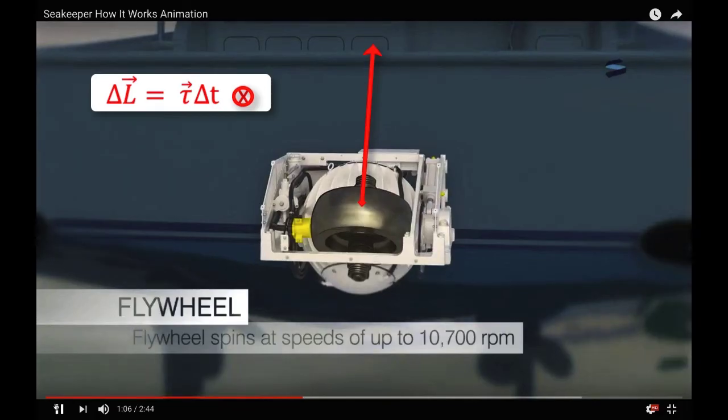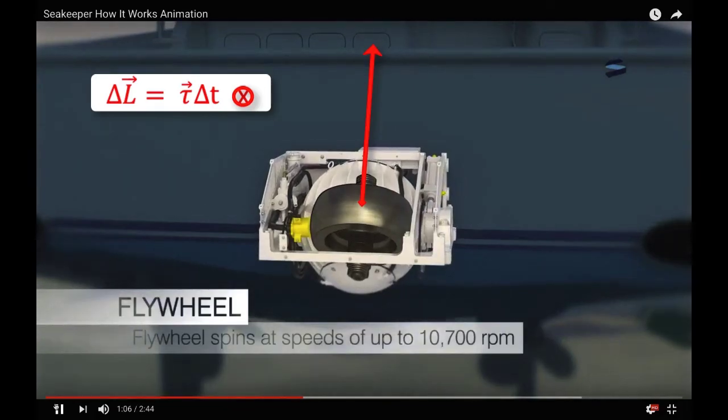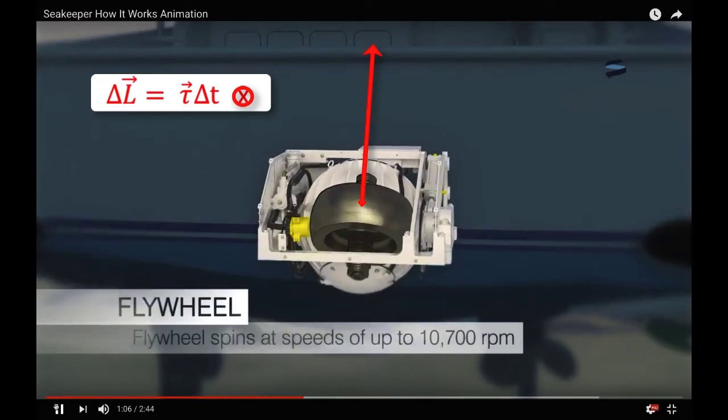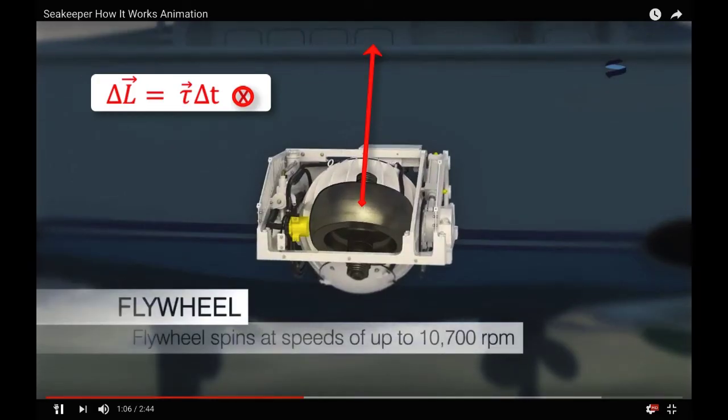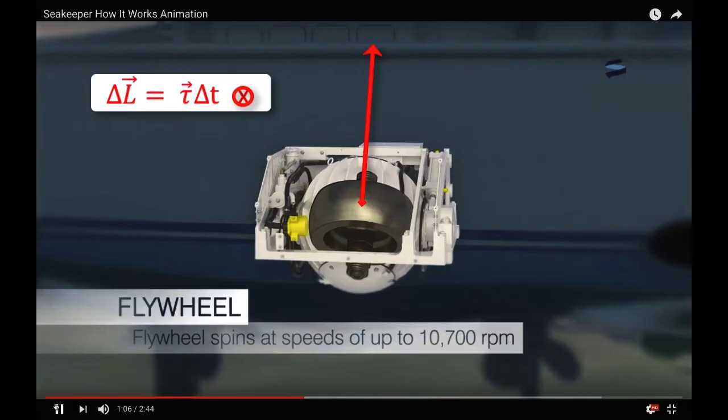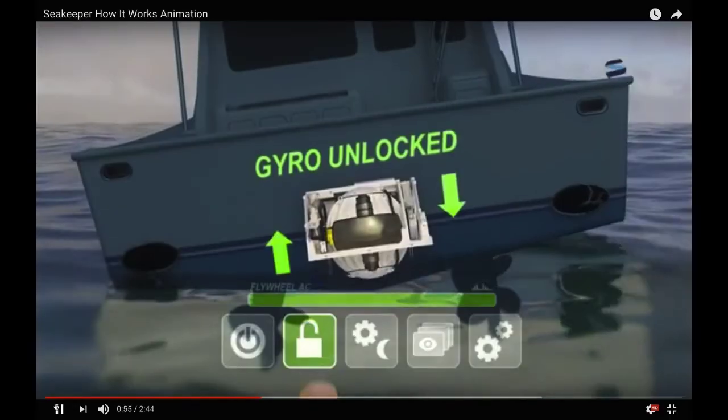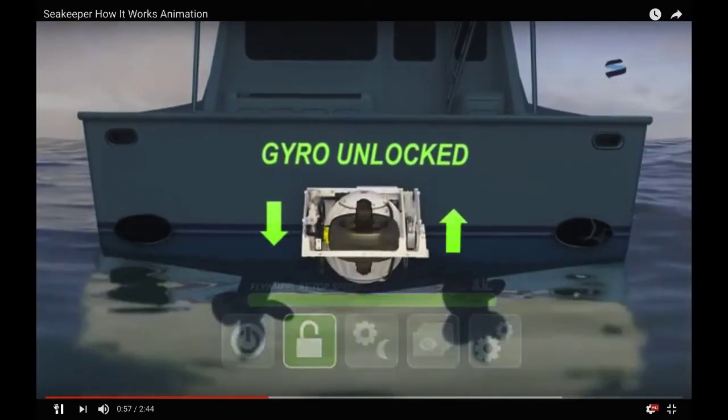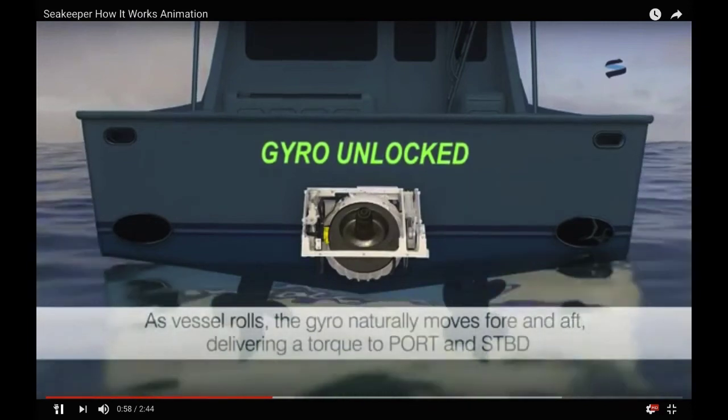Because the gyroscope had a very large angular momentum, it required a large torque in order to change its orientation. Thereby the gyroscope provided a large counter torque, which stabilized the boat from rocking. It's this counter torque that is indicated by the green arrows in the animation.